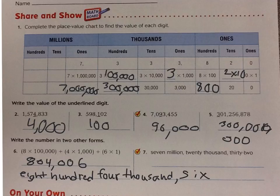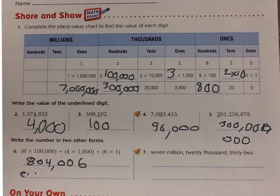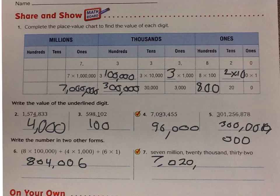Number 7 says seven million, twenty thousand, thirty-two. So I need to write that in standard form and then in expanded form. I have 7,000,000, so I know I'm going to need a millions place and I need 6 more digits. 20,000 — so there's no hundreds thousands. That means I need 3 more digits. 32 — there are no hundreds. So it's 7,020,032.